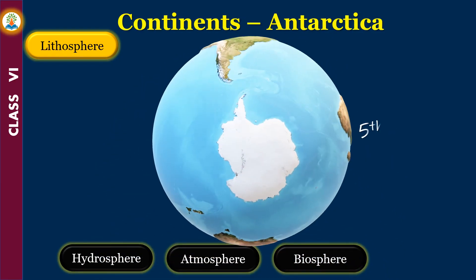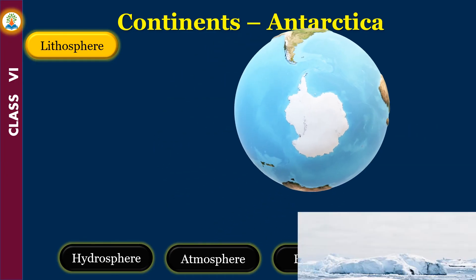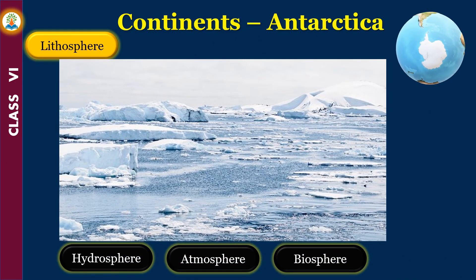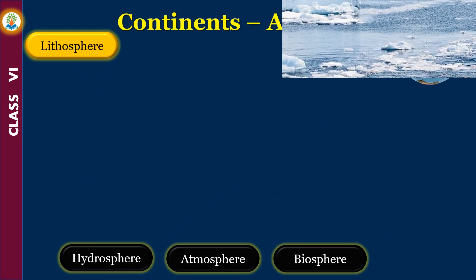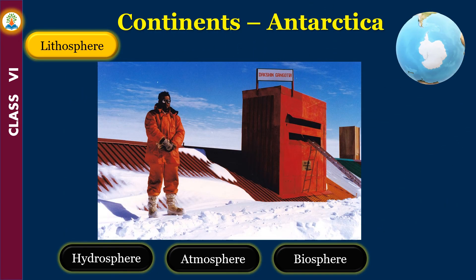Antarctica is the fifth largest continent of the world. It lies in the extreme end of the southern hemisphere, with the south pole almost at the center of it. Antarctica is permanently covered with thick ice and is thus called the frozen continent or the white continent. Many countries have set up research stations in Antarctica.